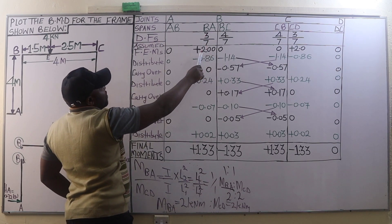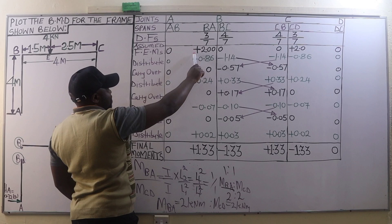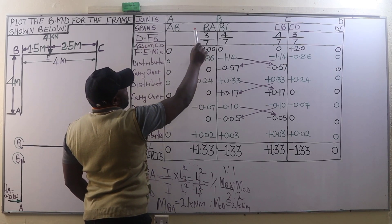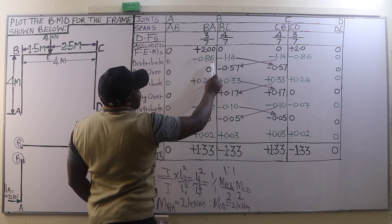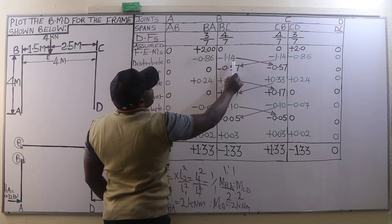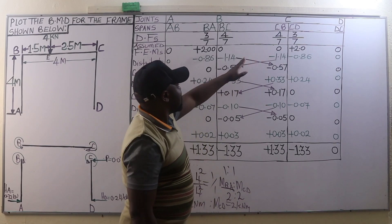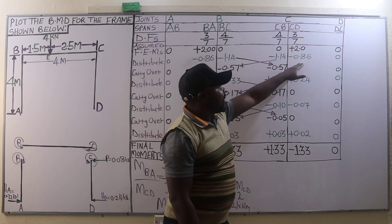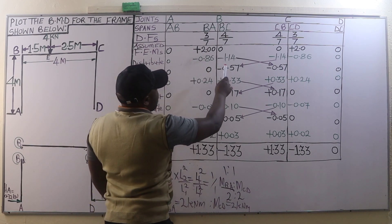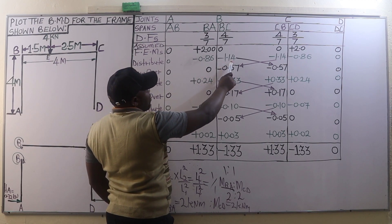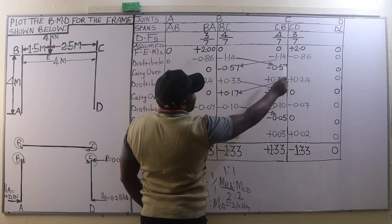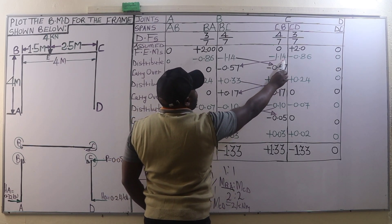On joint B, we have an excess moment of negative 2.0 — change the sign from positive to negative — then distribute: on member BA, negative 2 multiplied by 3/7 gives negative 0.86; on member BC, negative 2 times 4/7 gives negative 1.14. On member CB it is the same as BC, and on member CD it is the same as BA. Then carry over half of negative 1.14 from B to C, giving negative 0.57, and similarly half carried over from C to B is also negative 0.57.